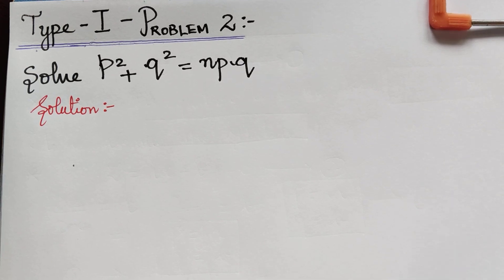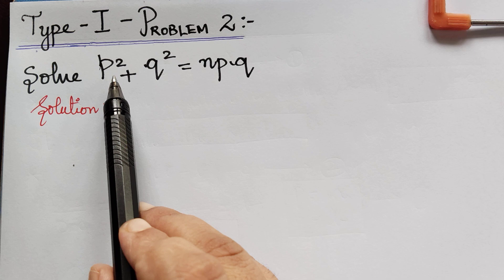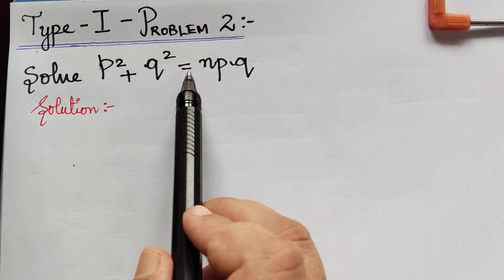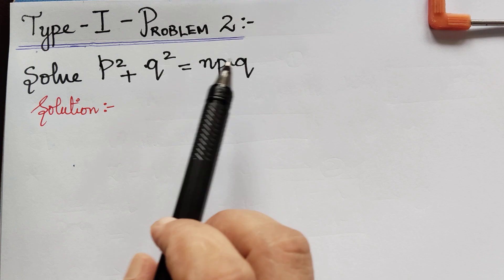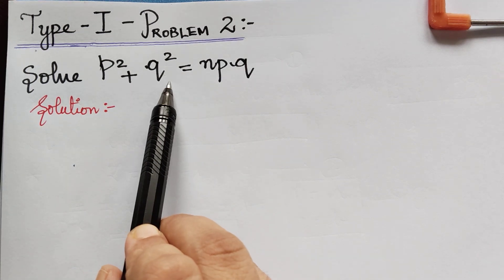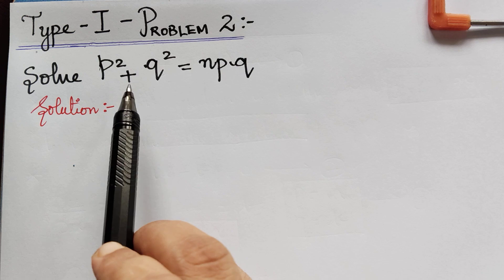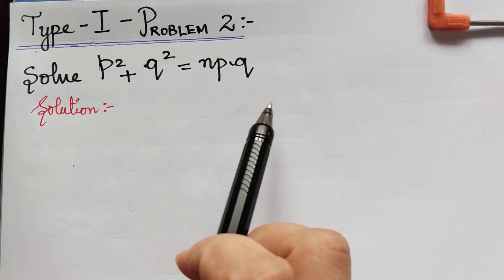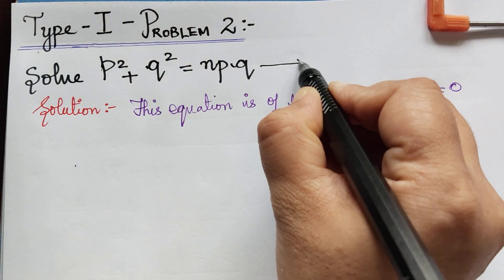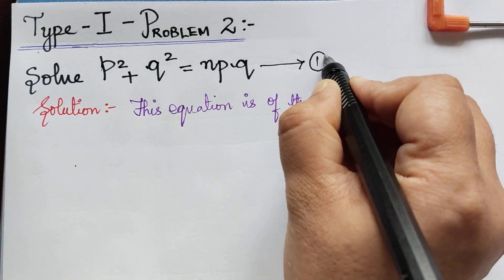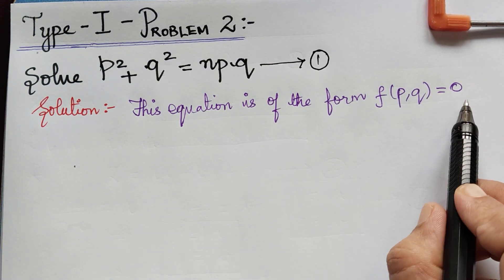Under type 1, we have problem 2. In the given question, we have p² + q² = n·pq. It is independent of x, y, and z — only p and q are present. So this equation is of the form f(p, q) = 0. We shall mark the given equation as equation 1, and therefore equation 1 is of the form f(p, q) = 0.